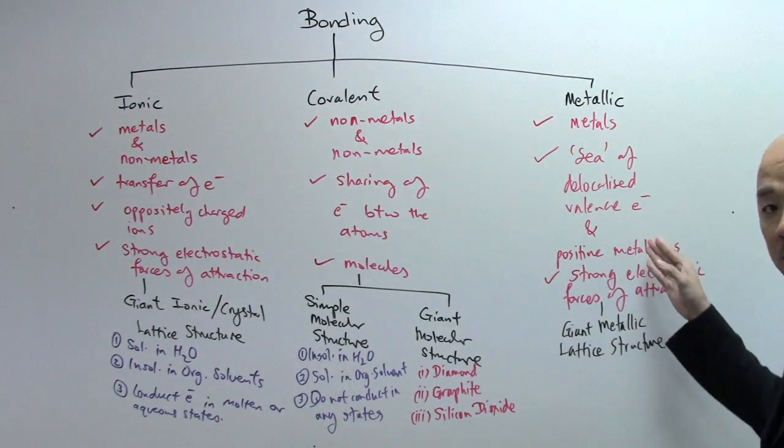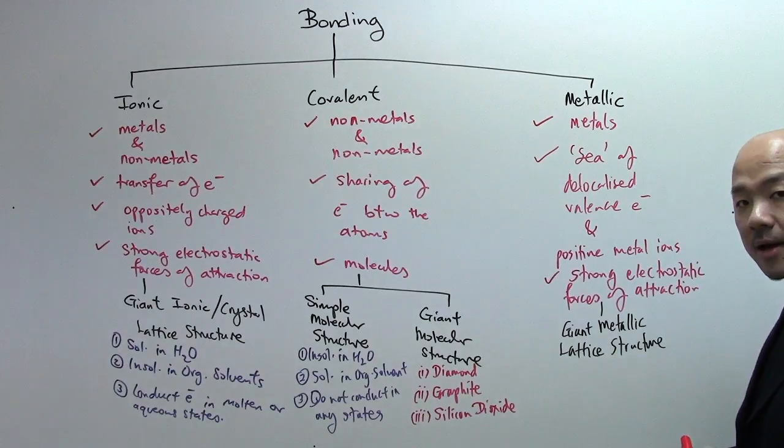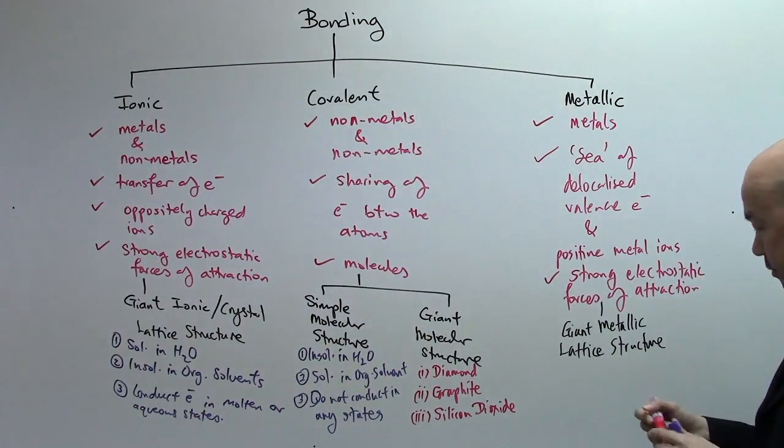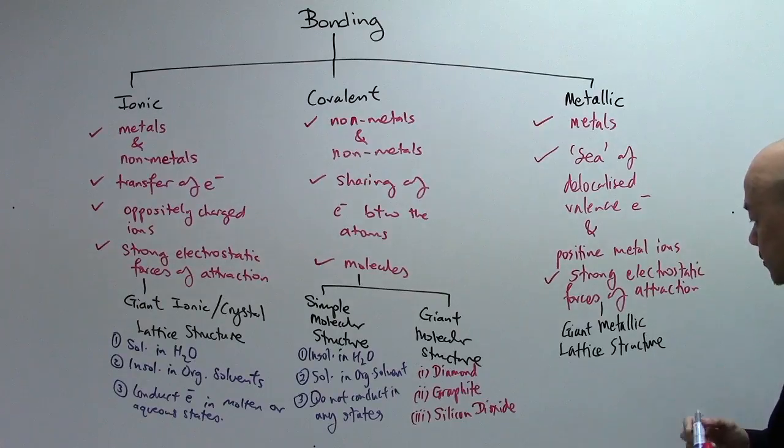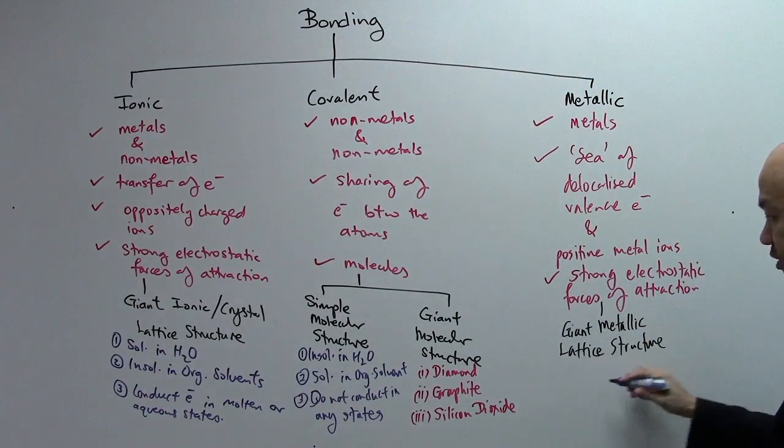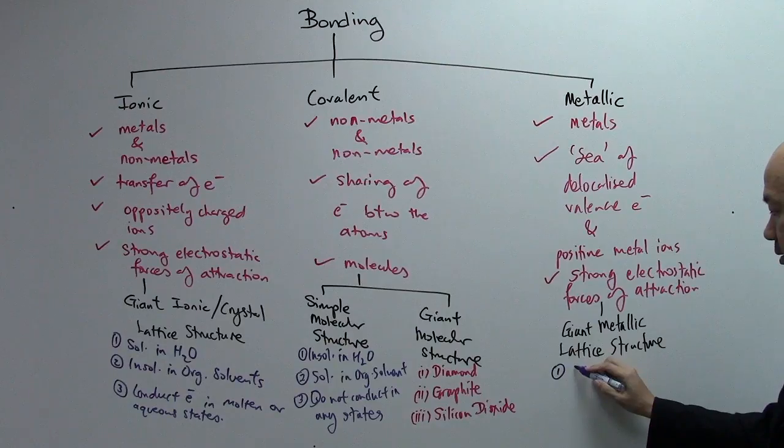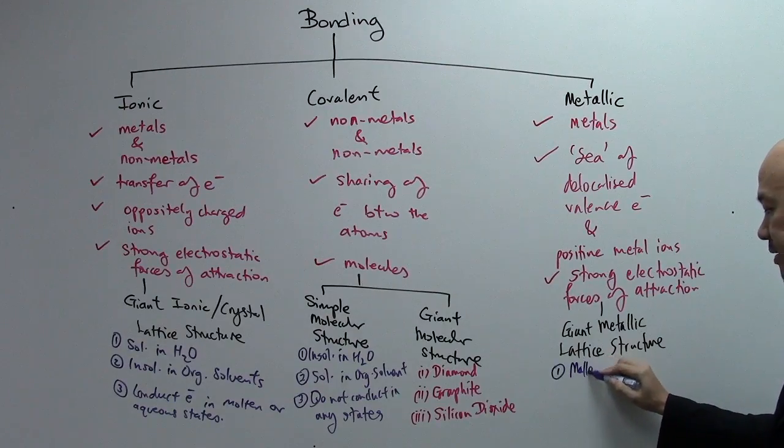The last one that we're going to talk about is metallic bonding. So, metallic bonding over here, you have a giant metallic lattice structure. The first property is that it is malleable and ductile.